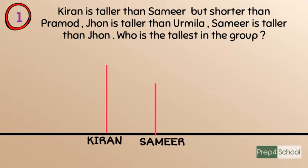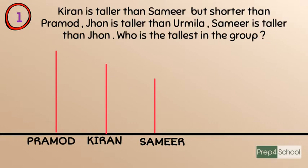Kiran is taller than Samir means Kiran's height is higher than Samir's. It can be drawn with Kiran's line higher than Samir's, indicating more height. The next sentence — Kiran is shorter than Pramod — means Pramod has a higher height than Kiran, and it can be drawn accordingly.